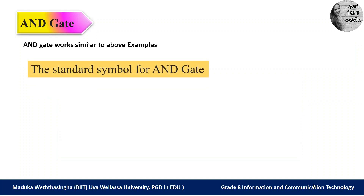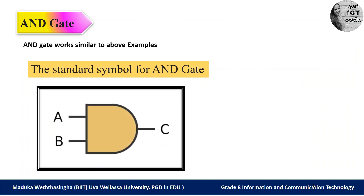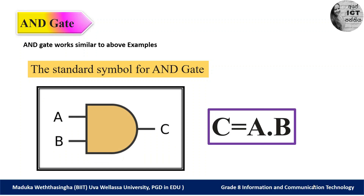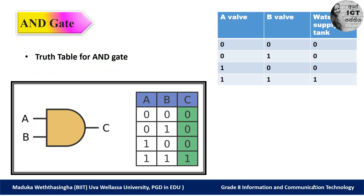Now we are going to identify the standard symbol for the AND gate. Please try to remember this shape. The AND gate always has inputs and an output — here there are two inputs A and B, and one output C. The logical expression is C = A · B, which looks similar to multiplication. So for the AND gate, you need to remember the standard symbol and the logical expression C = A · B. Now we are going to discuss the truth table.